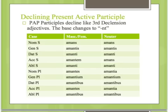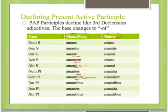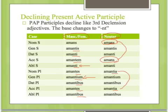The present active participle declines like a third declension adjective. Notice that the base changes to -nt-. For masculine and feminine: amans, amantis, amanti, amantem, amante. For third declension adjectives the ablative singular is always -i. Then: amantes, and it's an i-stem — so the genitive plural is -ium — ibus, ace, ibus. For the neuter, it is almost exactly the same except the accusative equals the nominative, so the accusative singular is amans. The nominative plural is -ia, just like maria.